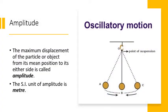Amplitude: Amplitude is the maximum displacement of a particle or object from its mean position to its either side. And the SI unit of amplitude is meter. You can see the figure here children. You can see the oscillatory motion.